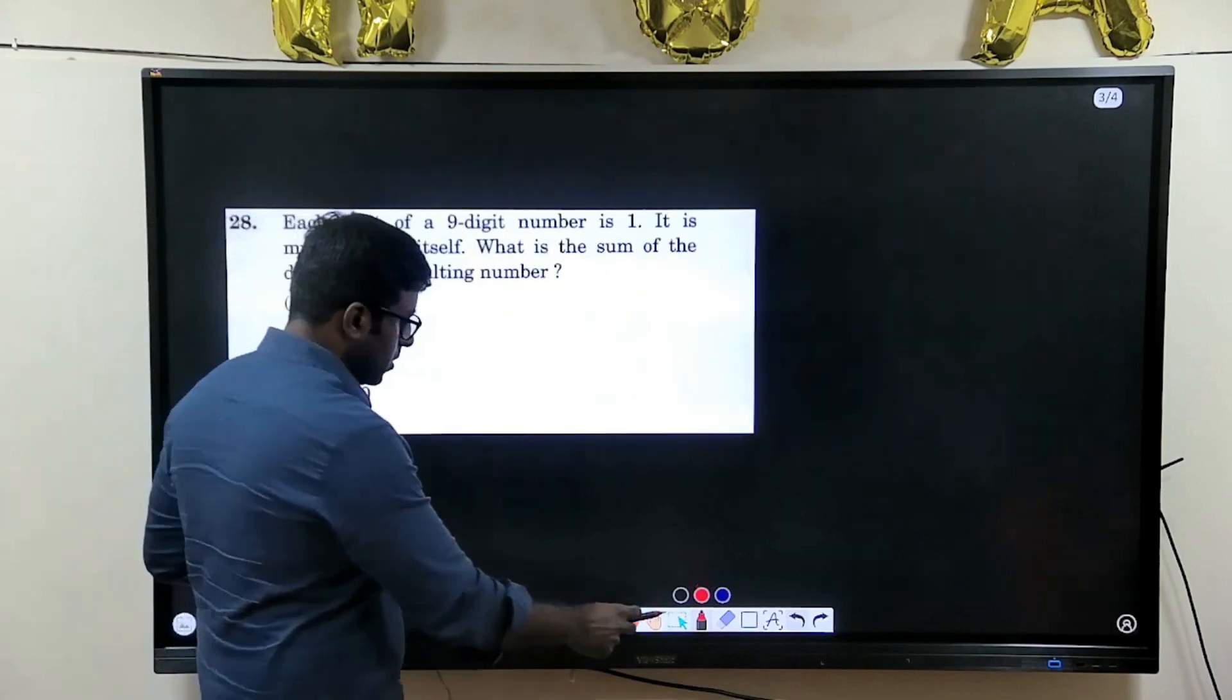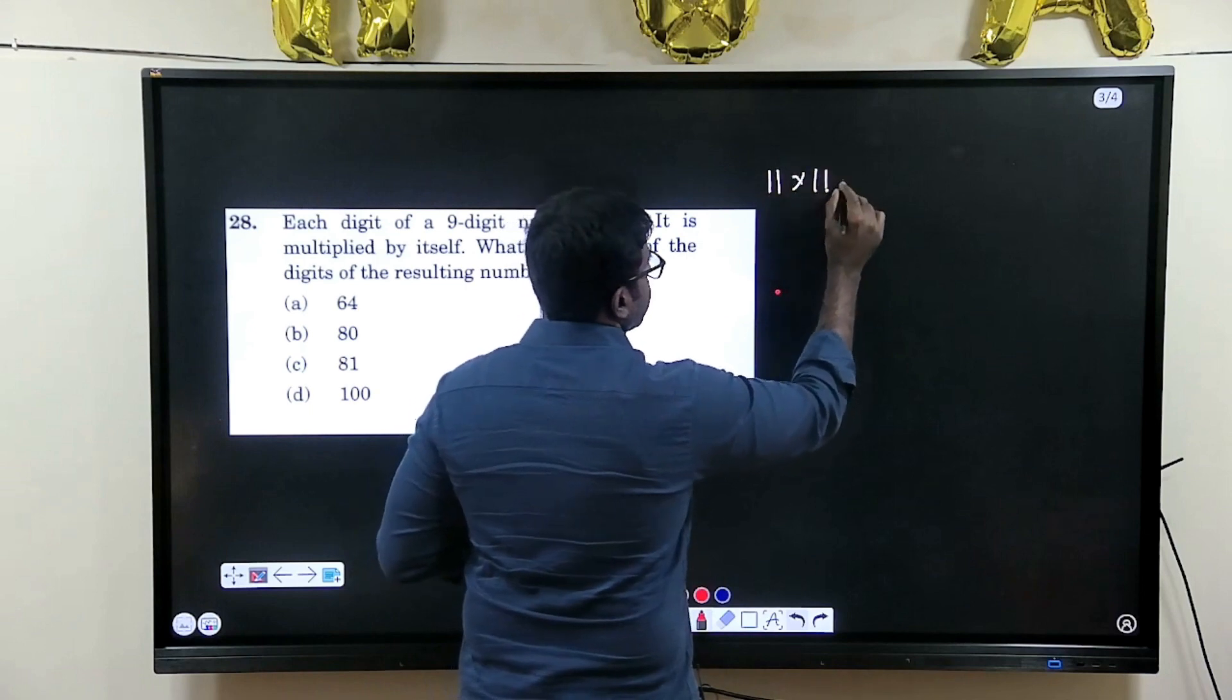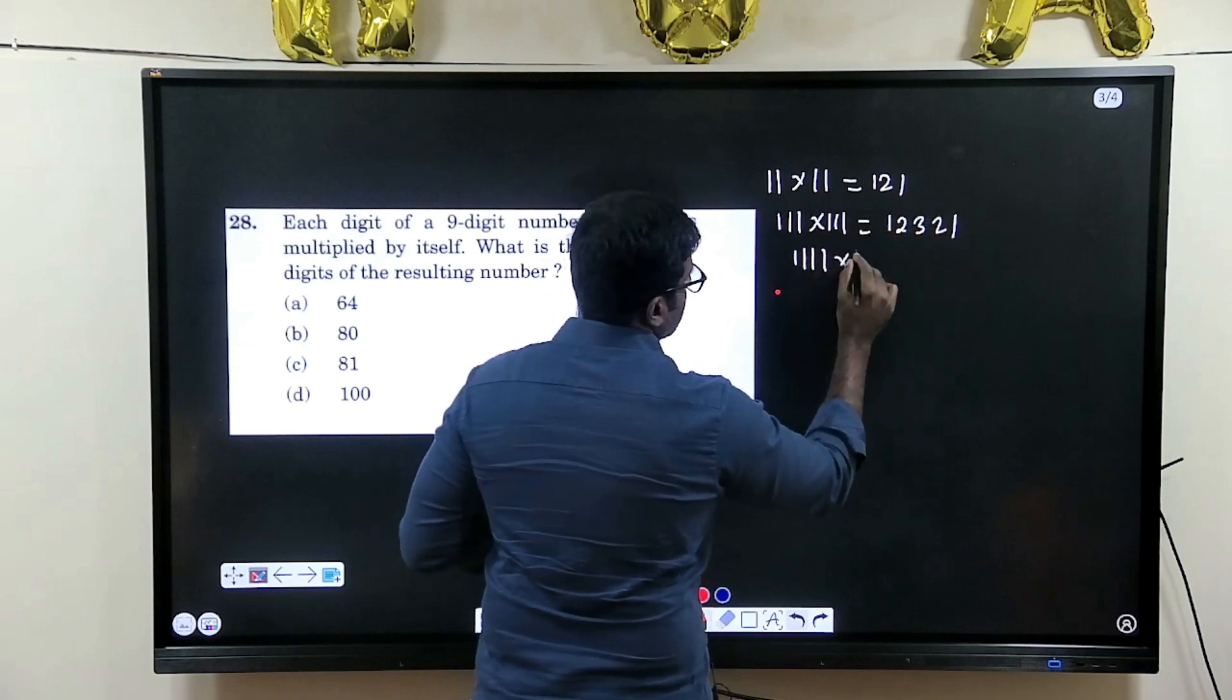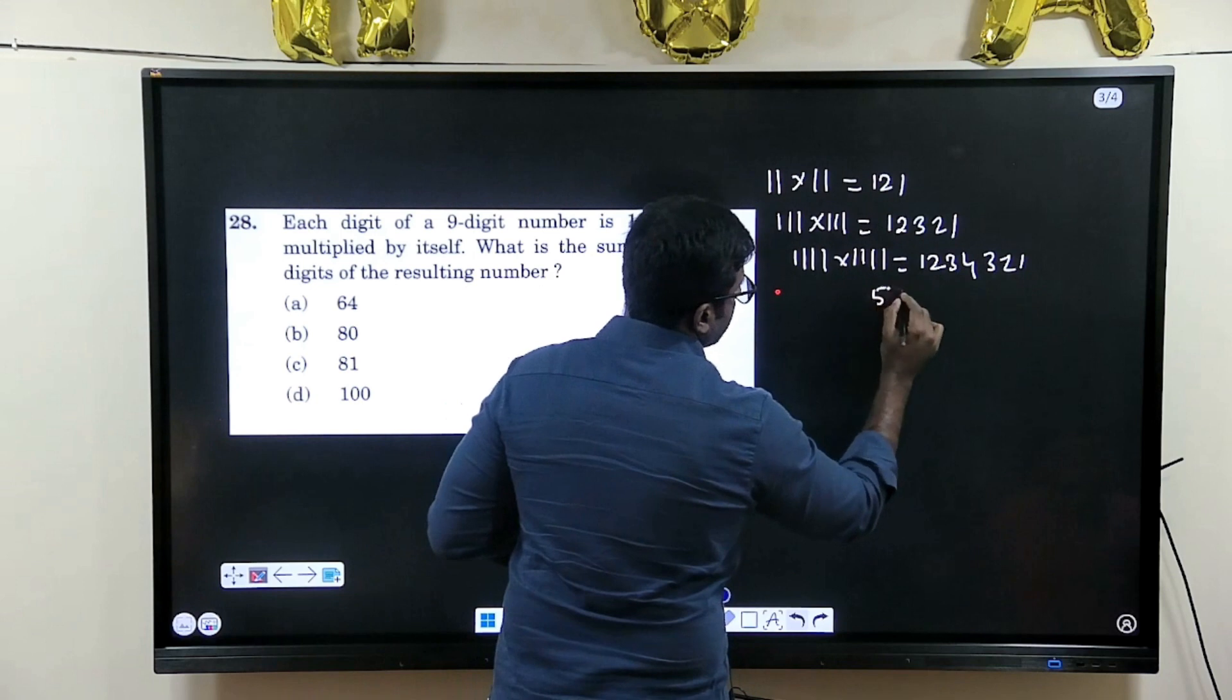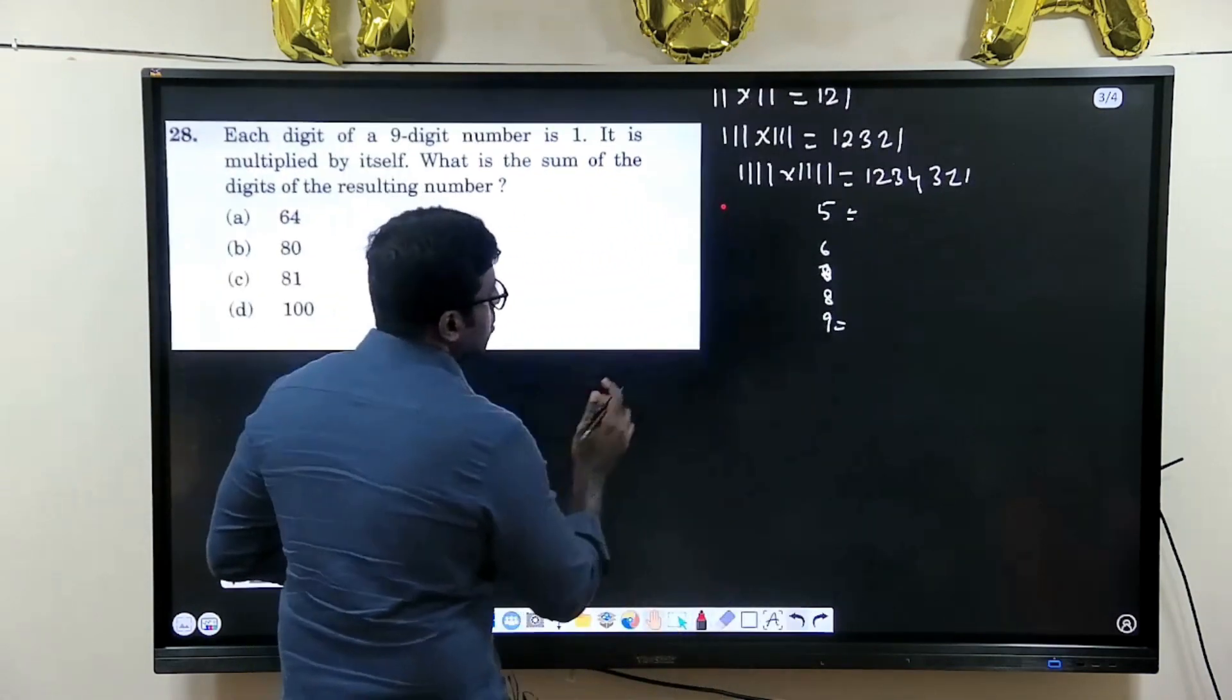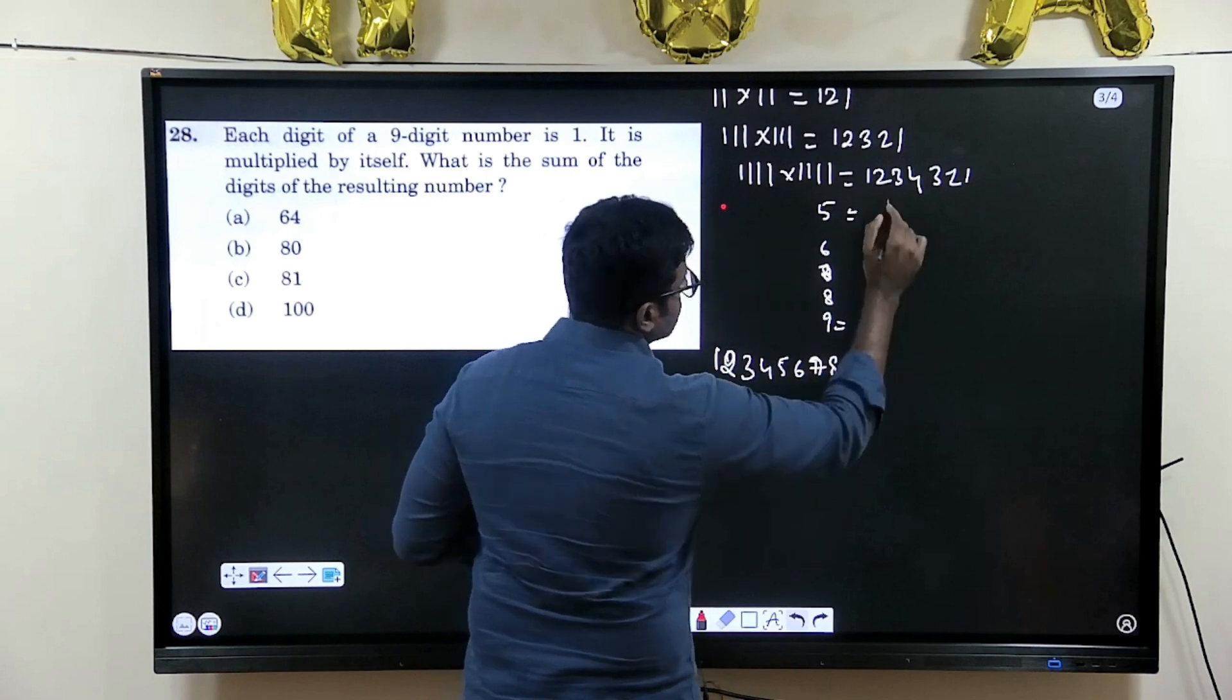The next question that we will go here is that this question has a logic of if you multiply 11 into 11, it will be 121 and the logic of 1, 1. See here, it will be 1, 2, 3, 2, 1 and 11^4, it will be 4 means you will have 1, 2, 3, 4, 4, 3, 2, 1. Like this 5 means it will be something, 6 means something, 7 means something, 8 means something. Again, 9 means what will be the answer or what will be the multiplication is that you will have 1, 2, 3, 4, 5, 6, 7, 8, 9.